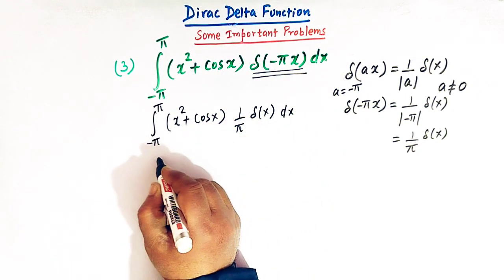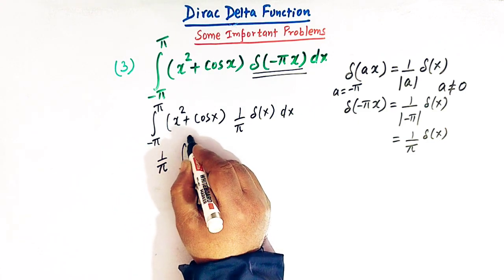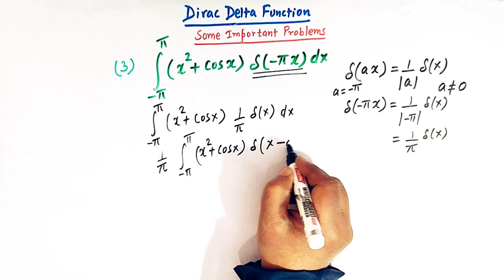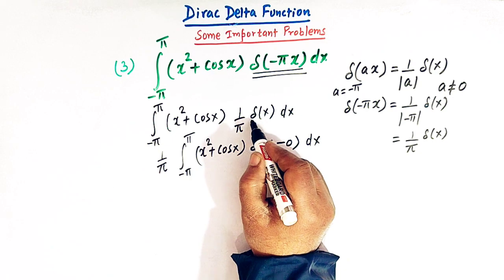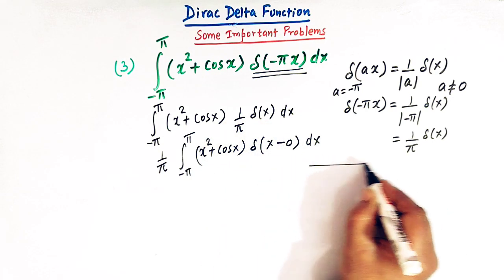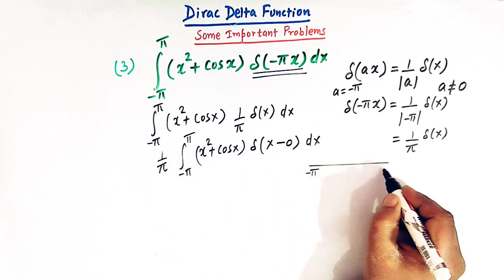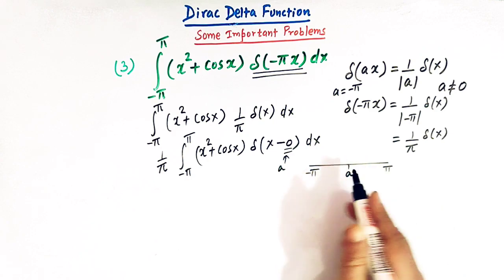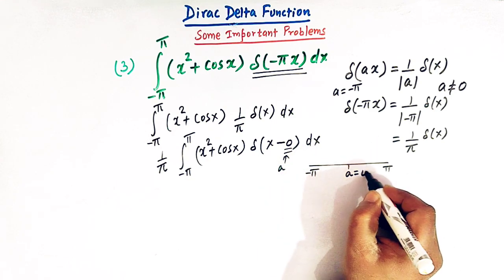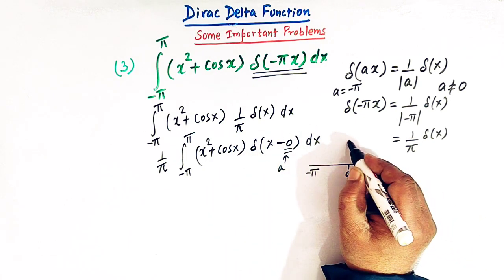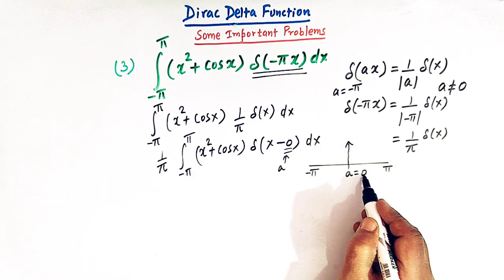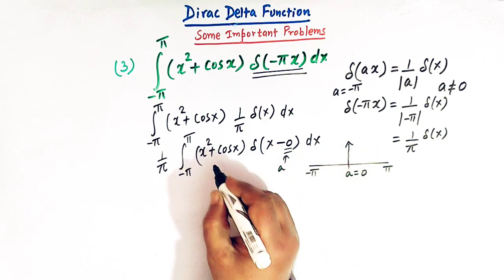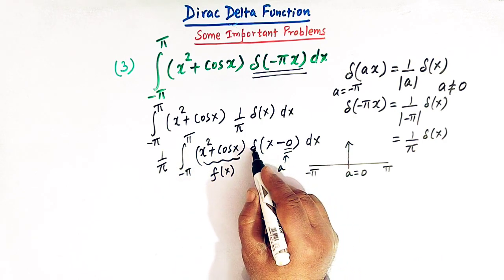We can take one over pi outside the integral. We have the integral from minus pi to pi of (x squared plus cos x) times delta of x. Now delta of x can be written as delta of x minus zero — this is an important point. The limits are from minus pi to pi, and the point a equals zero lies between minus pi and pi. The value of the delta function exists only at this point, a equals zero.